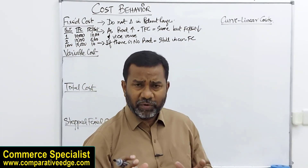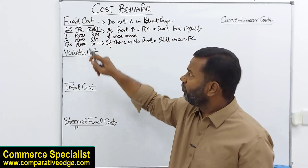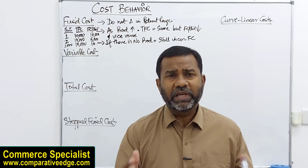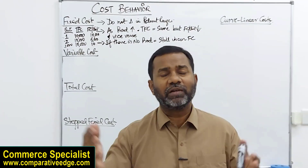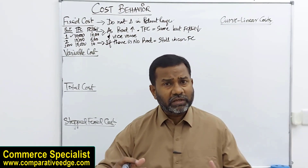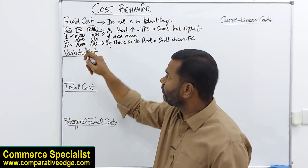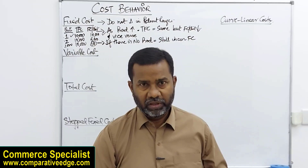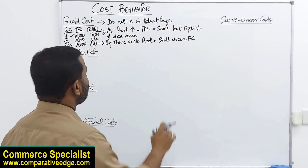As production increases from one unit to two, to one thousand units, your fixed cost per unit is decreasing. Because of this reason, we say companies who operate at a larger scale get economies of scale — the benefits enjoyed due to large-scale production. If a company makes only one unit, their fixed cost per unit is 10,000, but if you increase your scale of production, your fixed cost per unit reduces, your average fixed cost goes less, and your cost of production goes down.